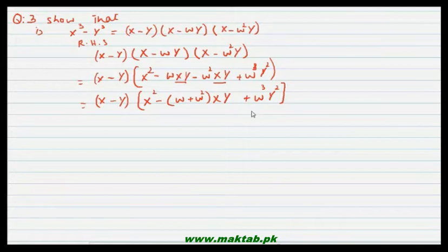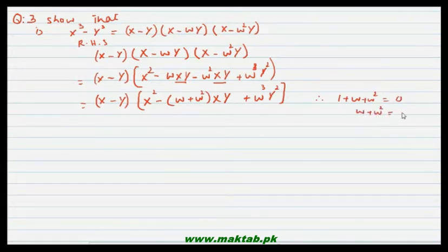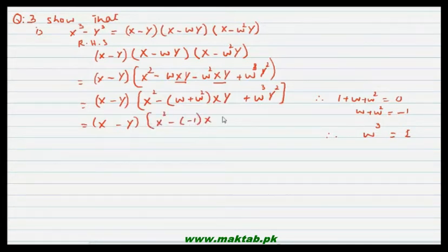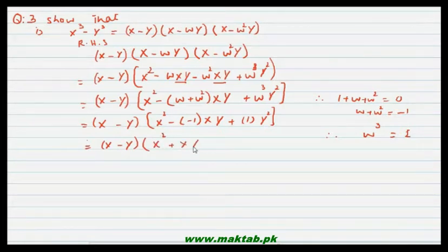Hum cube roots of unity ki properties use karenge — do properties use hongi. Ek hamare paas hoti hai: 1 plus omega plus omega square is equal to zero, toh wahan se omega plus omega square ki value aayegi minus one. Aur doosri property: omega cube is equal to 1. Yeh values put karne par yeh ban jayega: x minus y into x square plus xy plus y square, which is equal to x raised to power 3 minus y raised to power 3.